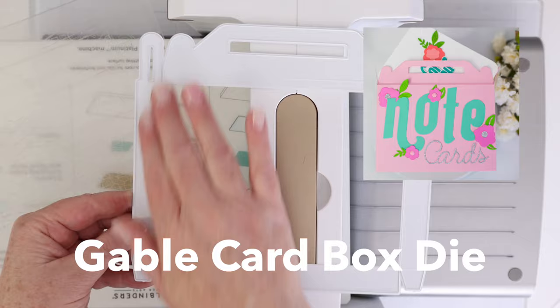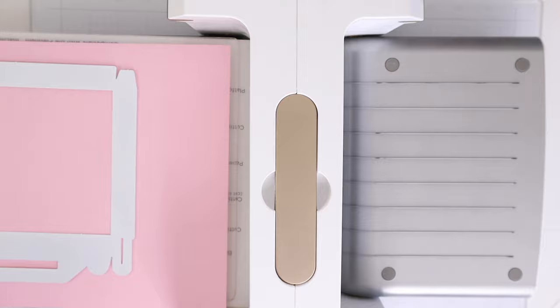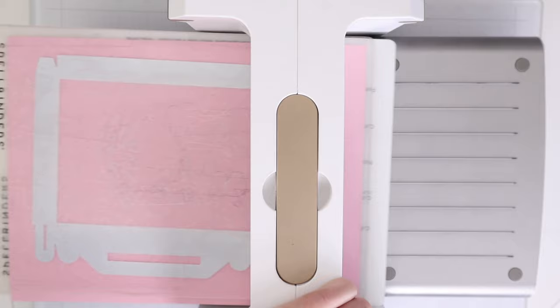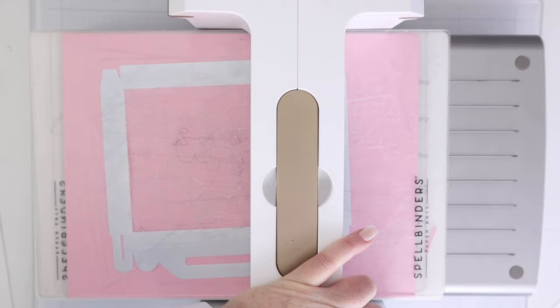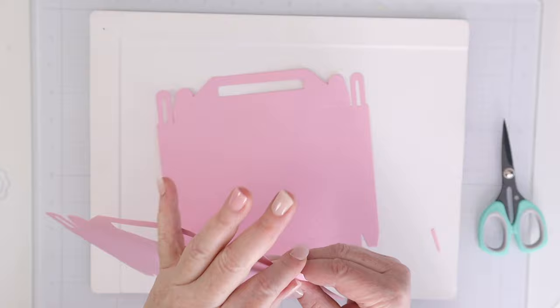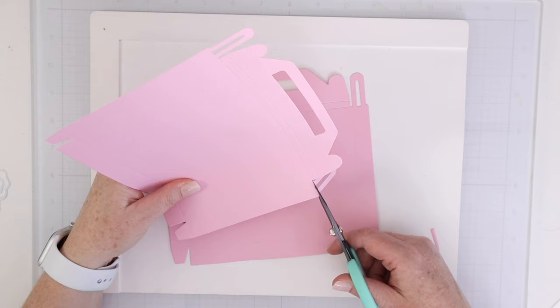Here is the gable card box die. Now this is a larger size die, so I'm having to use my original platinum, not the platinum six. So the original Spellbinders platinum has that wider platform that will fit this die. The reason that they did a larger die was so that you only need to cut out two pieces, and it will be able to create the entire box that will hold A2 cards. So again, for one of the pieces that you cut out, you cut that gable box whole die out twice.